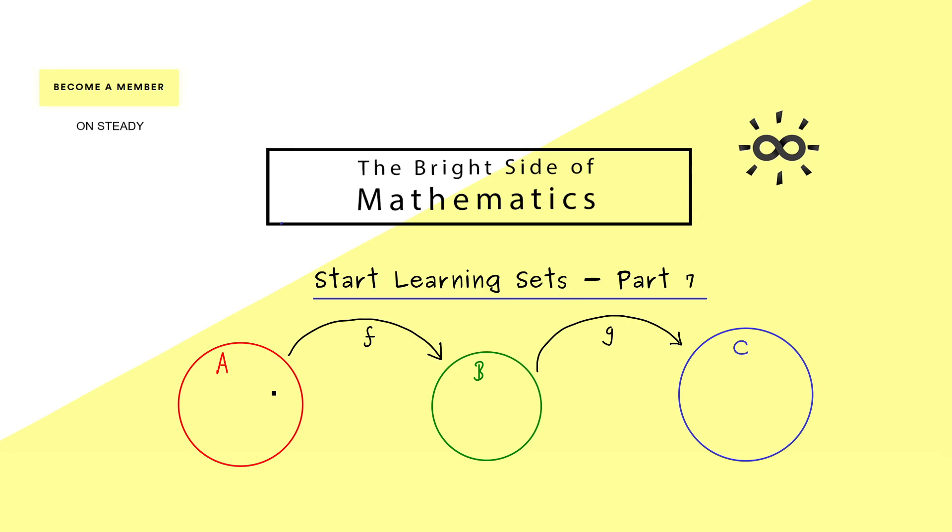However, this means for an element a you can apply both maps. First you apply f and then you apply g, and the result is then a map from A into C. This one is what we call the composition and is denoted with a little circle between the two maps.